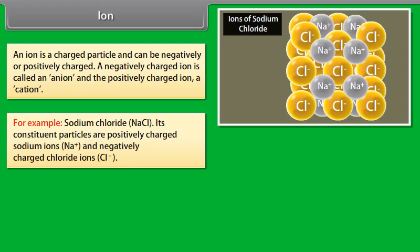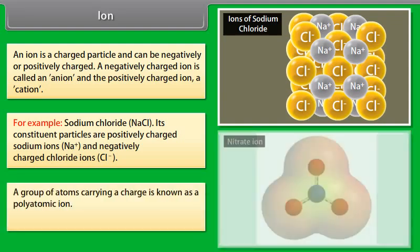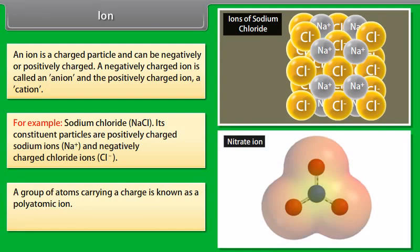Ion. An ion is a charged particle and can be negatively or positively charged. A negatively charged ion is called an anion and the positively charged ion is called a cation.